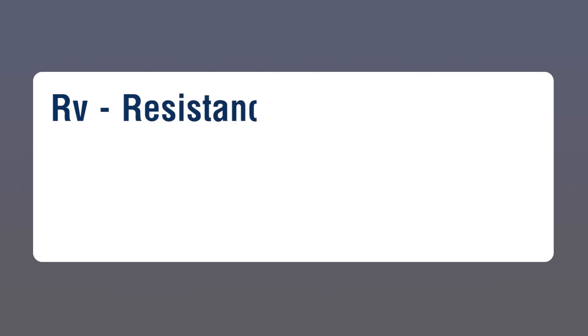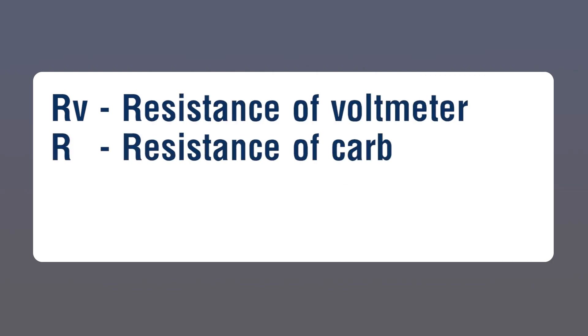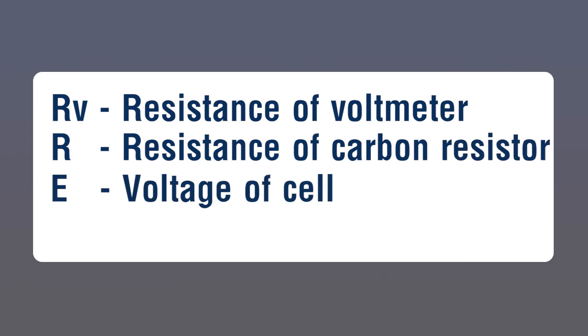R: resistance of carbon resistor. V: resistance of voltmeter. E: voltage of cell. V: voltmeter reading.